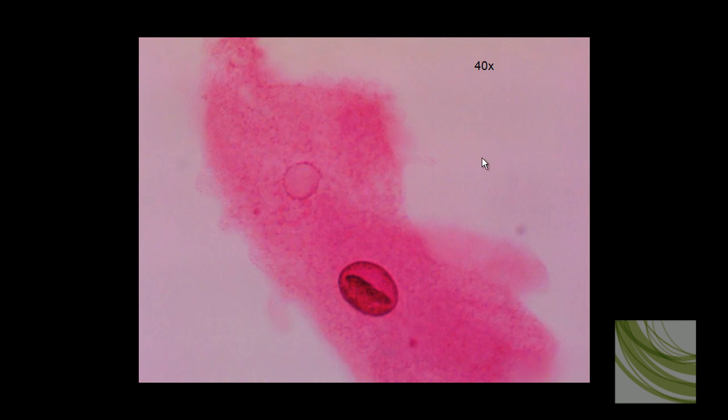Here is the same amoeba using the 40x objective. We can see several other very interesting little structures here. Obviously we can see our nucleus, but here is a large contractile vacuole. It looks like we can see a couple little food vacuoles buried deep into the cytoplasm.